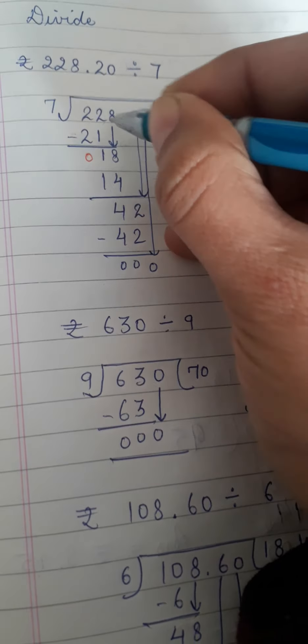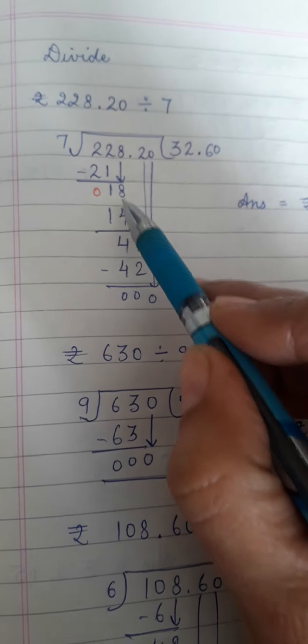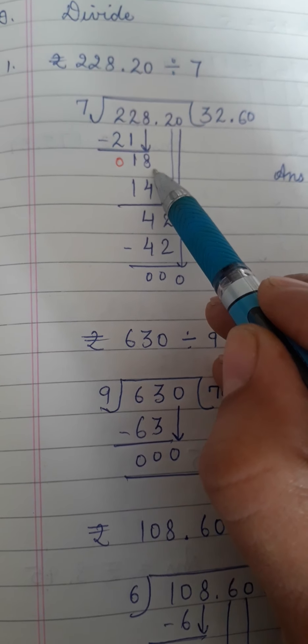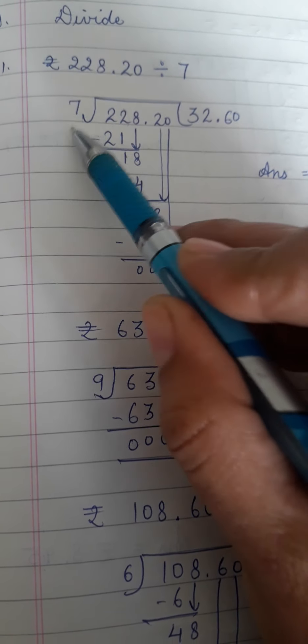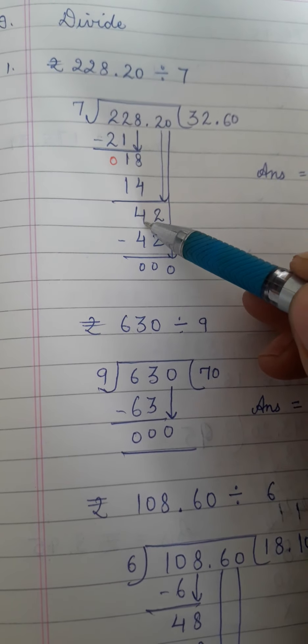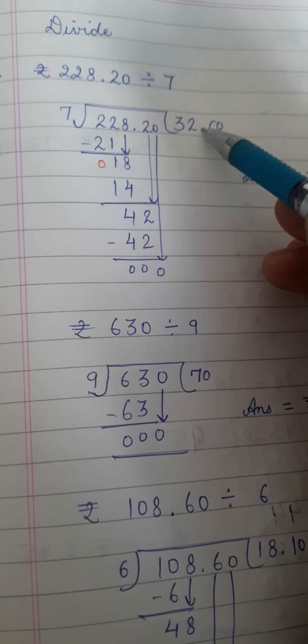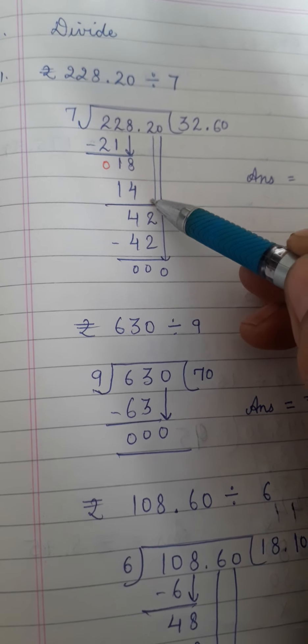Now you are left with 1 only. From top you will bring down the next digit 8. Now you have to speak the table of 7 for 18. 7 ones are 7, 7 twos are 14, 7 threes are 21. 21 is bigger than 18. So 7 twos are 14 will go. 18 minus 14 is 4. Now decimal comes in between. So you have to put decimal in the question first. Okay? After that you will bring down the next digit. That is 2.